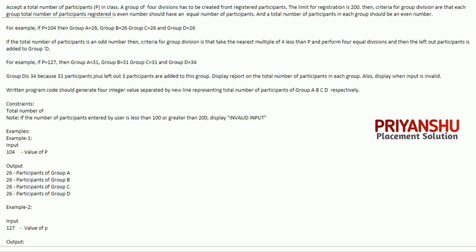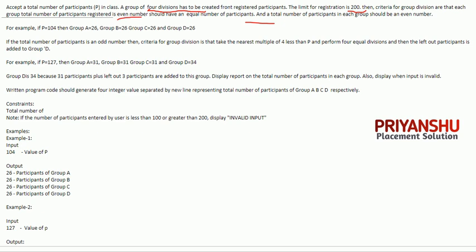The question is: given the total number of participants in a class, a group of four divisions has to be created. The limit for registered participants is 200 only. The criteria for group division are: each group should have an equal number of participants, and the total number of participants in each group should be an even number.